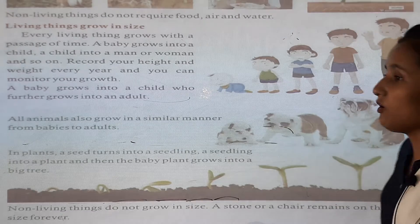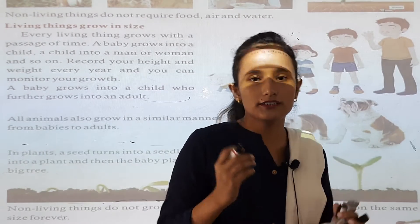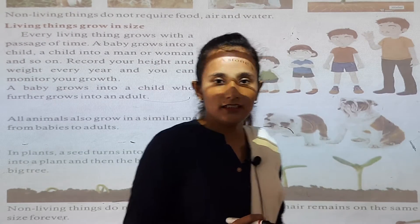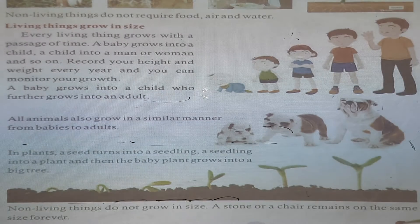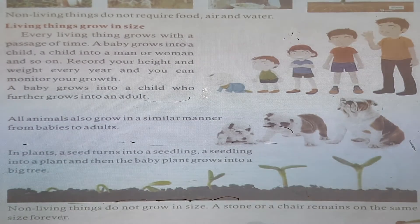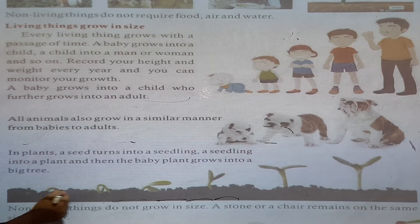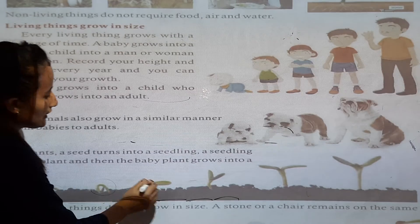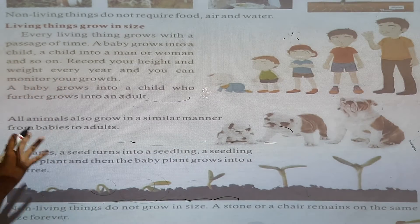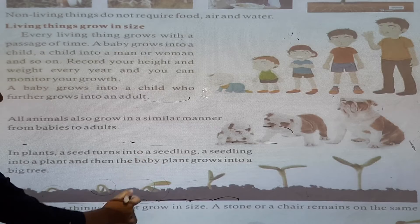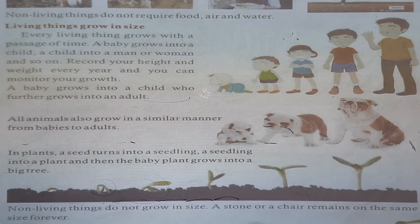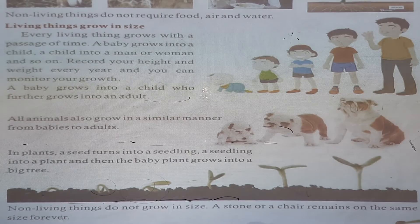In plants — how do plants grow? A seed turns into a seedling, and a seedling into a plant. The baby plant grows into a big tree. This is a seed, and these are the seedlings — turning day by day.